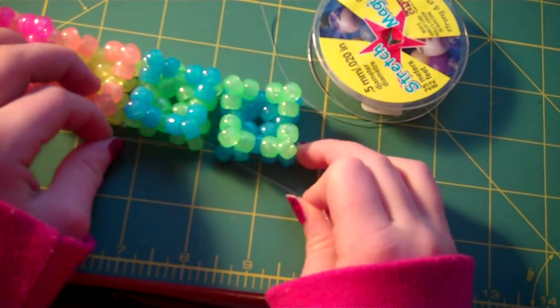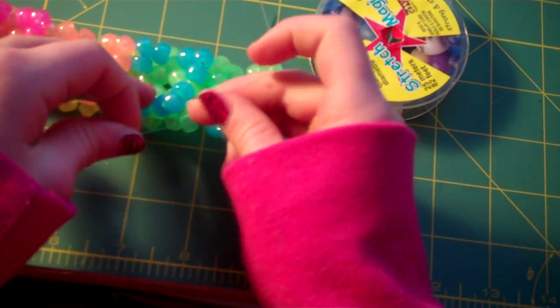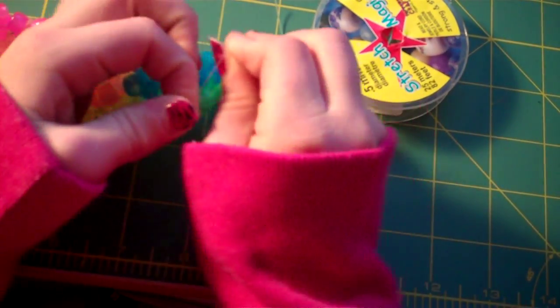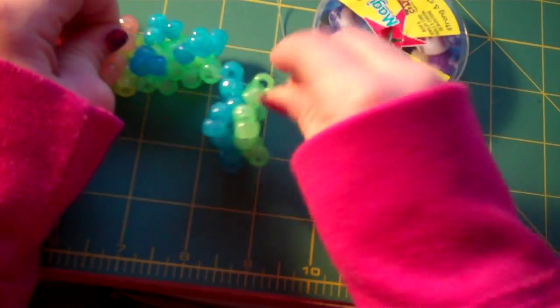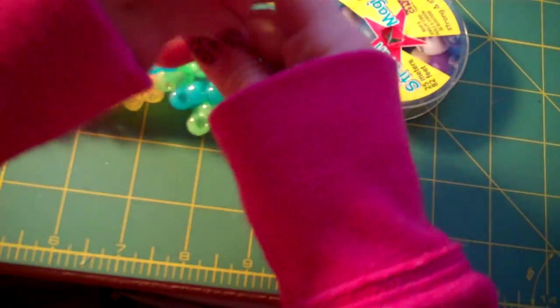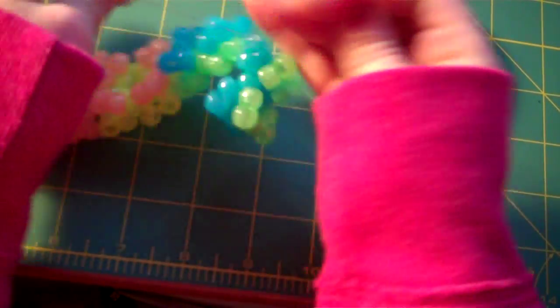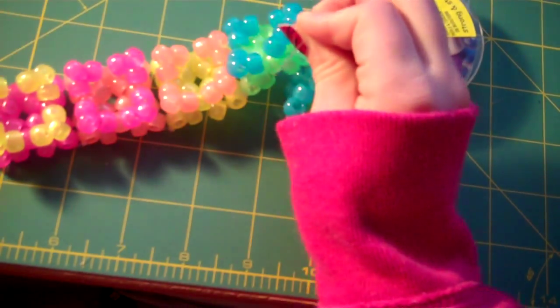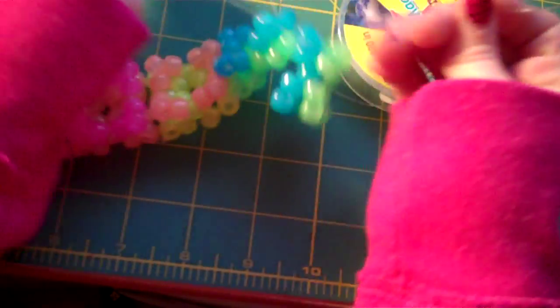So just thread through both of those points and tie them, points of the squares, and make sure you thread through the correct points that you want to flared, the one that you want connected.